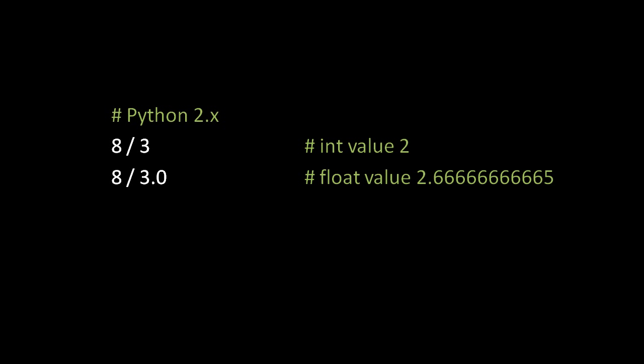One of the biggest gotchas in Python — which Python 3 fixed — was that in Python 2, the regular division operator when both operands were ints would return an int value even if the correct answer would be a float. For example, 8 / 3 in Python 2 returned the int value 2. The trick was to make sure one operand was a float — so writing 8 / 3.0 would return the correct float value 2.6666.